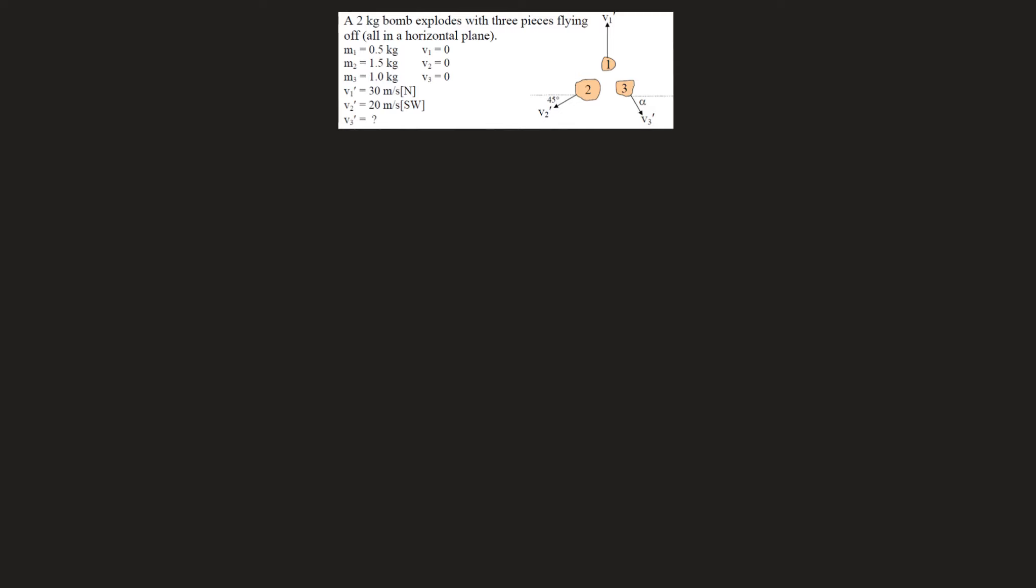It's also really important to note that v1, v2, v3 initial are all equal to 0, which means there is no initial momentum. So when I write m1v1 + m2v2 + m3v3, the left side of this equation is actually just equal to 0.